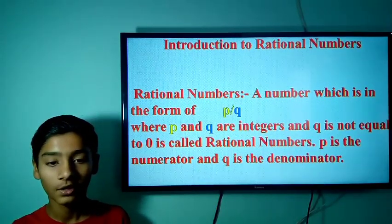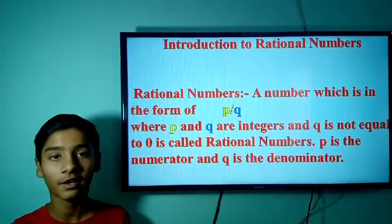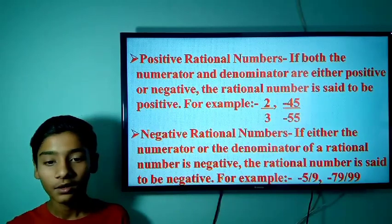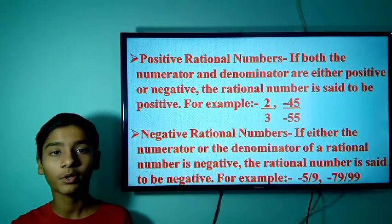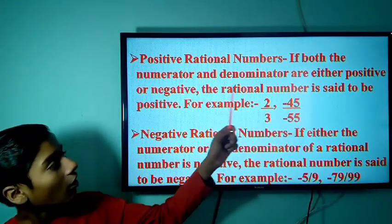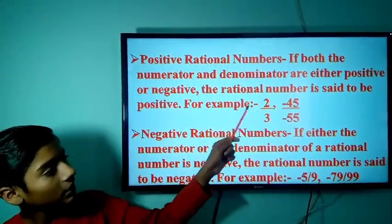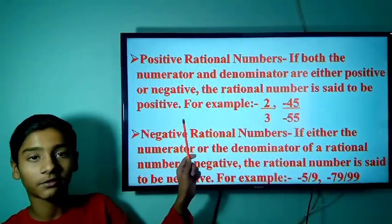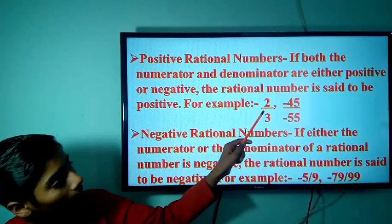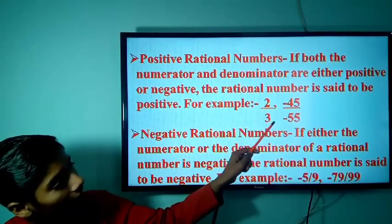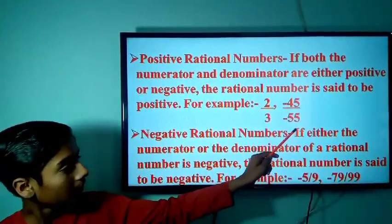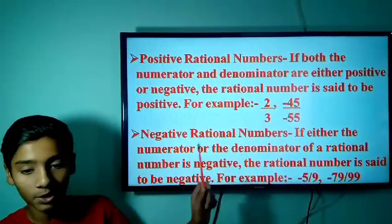Let's differentiate Positive and Negative Rational Numbers. Positive Rational Numbers: if both the numerator and denominator are either both positive or both negative, the rational number is said to be a positive rational number. For example, 2/3 and -45/-55 are examples of positive rational numbers.